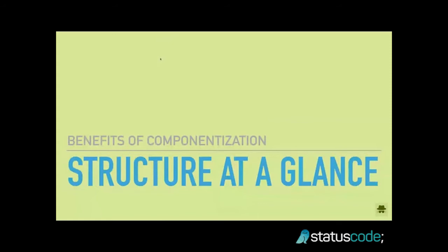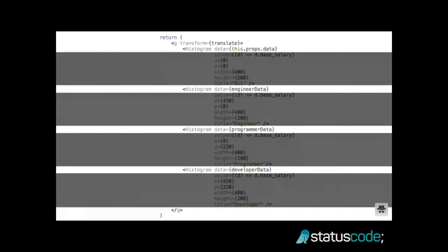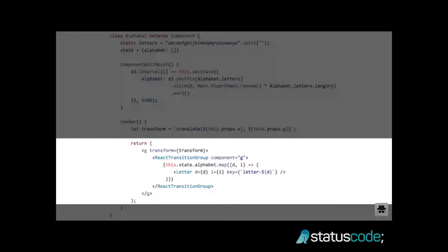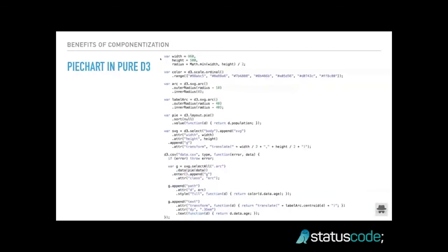Another benefit of having components is that you can see the structure of your data visualization at a glance. When you look at four histograms, you immediately know that this is four histograms. When you look at the alphabet, you say, this is just a list of letters. You immediately see what's going on. Now if you compare this to D3, this is a pie chart example in D3 — if you Google 'D3 pie chart', this is the first code that shows up. It's from Mike Bostock, who made this as the example of how to use D3 well. I have no idea what's going on here.